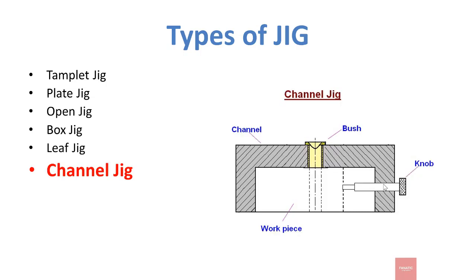Next we have channel jig. Channel jig is a simple form of jig in which we place our piece and through a knob we can fix it to its position. We then perform the drill operation from the top plane of the workpiece.